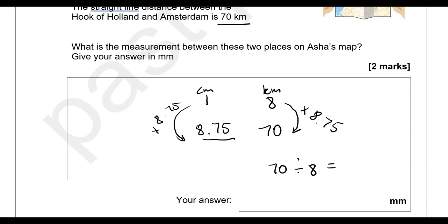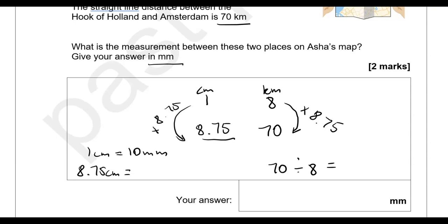We need to give the answer in millimetres. One centimetre equals 10 millimetres, so 8.75 centimetres times 10 gives us 87.5 millimetres.